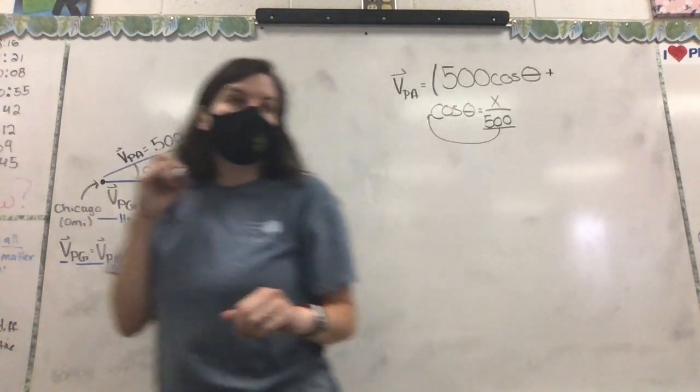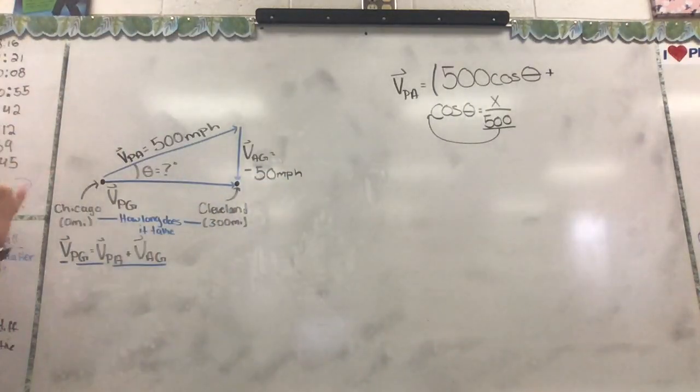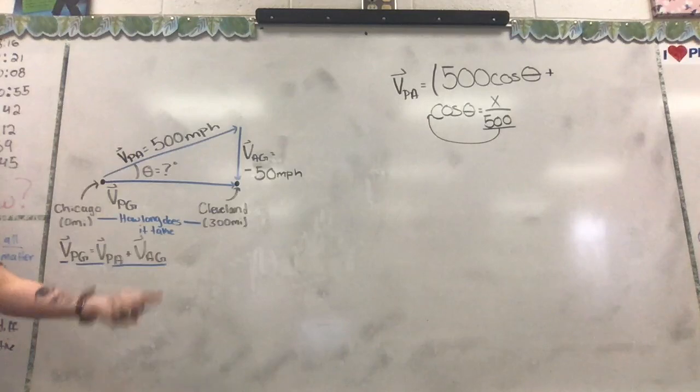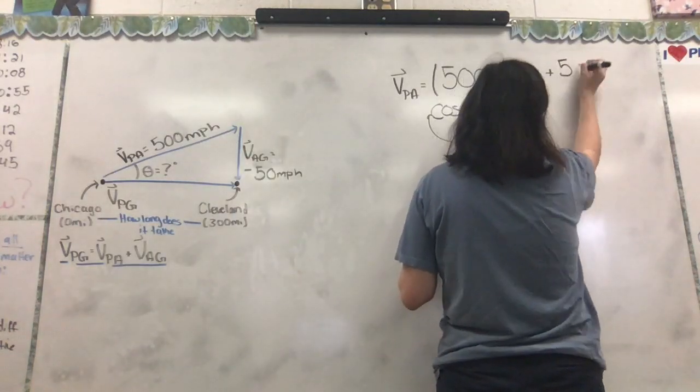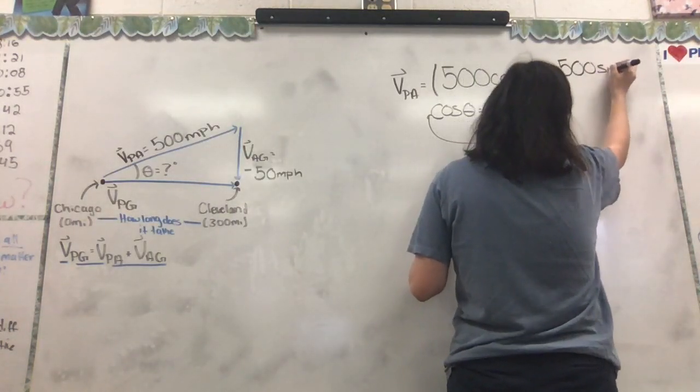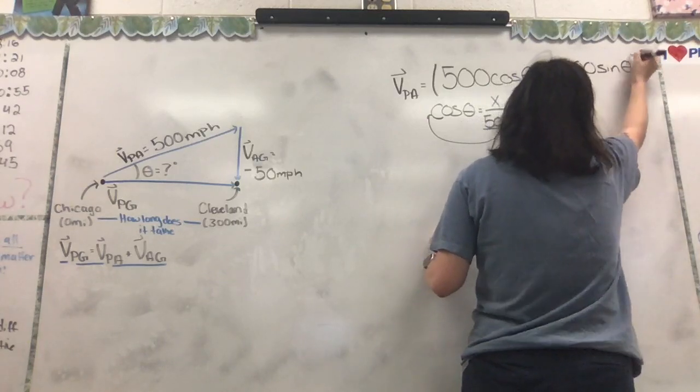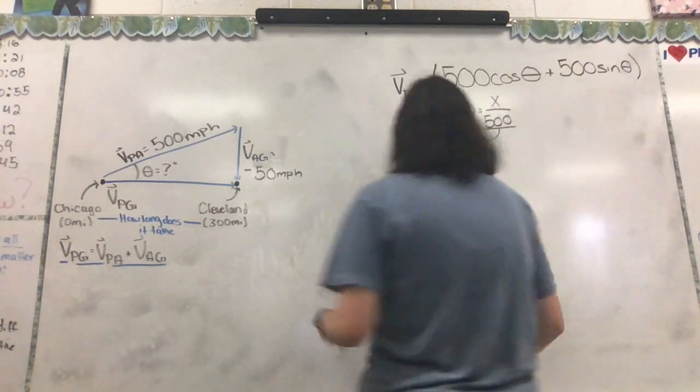Then we need our Y component. If our X is 500 cosine of theta, what do you think our Y component is? Yep, 500 sine of theta, because we're doing everything in reference to theta.